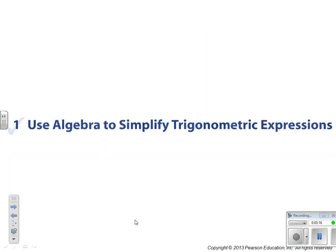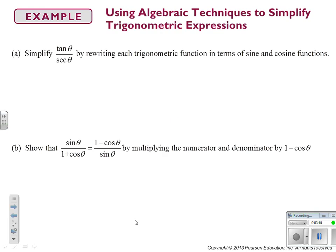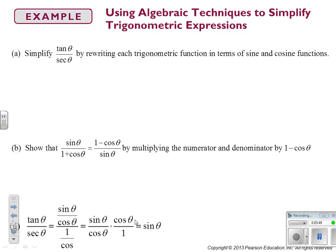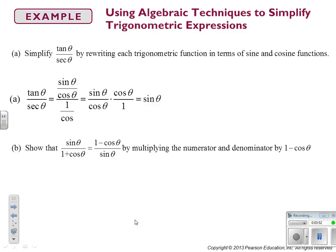We're going to use algebra to simplify trigonometric expressions. If we simplify tan θ over secant θ, we're going to rewrite each trig function in terms of sine and cosine. Highlight this somewhere on your paper: one method of attack when fussing with trig functions is to get everything in terms of sine and cosine. So tan θ is sine over cosine, and secant θ is 1 over cosine.